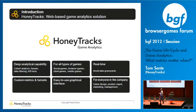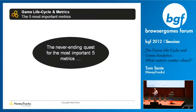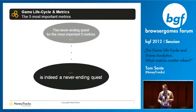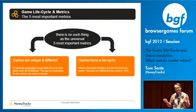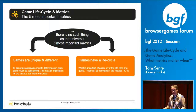Let's get started. There's typically always the never-ending quest for the most important five metrics. I hear that quite often — which are the five most important ones? You can read about them on the web; some people say three, some say seven. But actually, it's a never-ending quest, because there's nothing like a fixed set of five, seven, or ten metrics that keeps you on the safe side. Games are unique and different, and of course they have a life cycle.